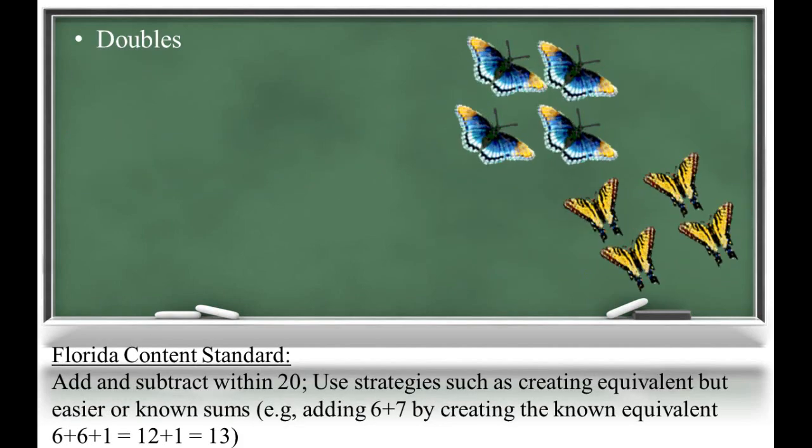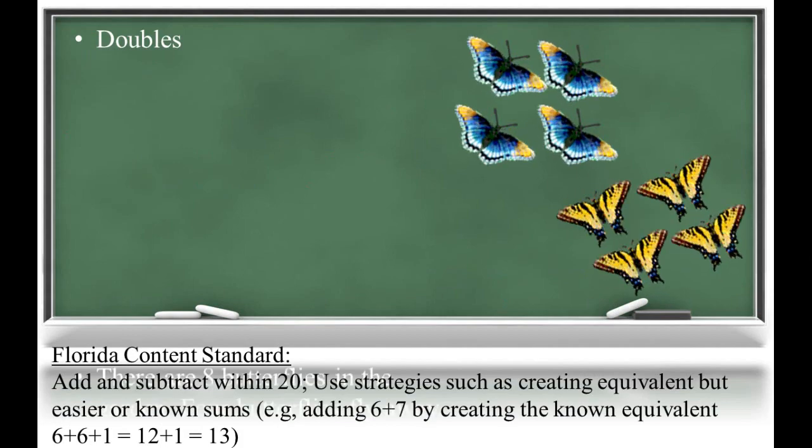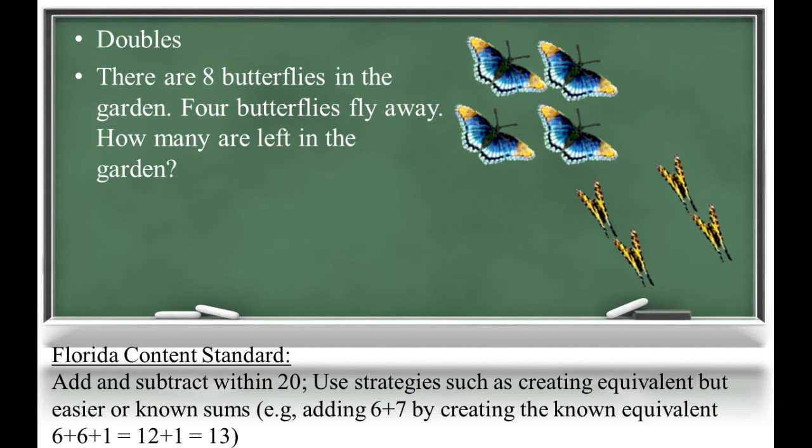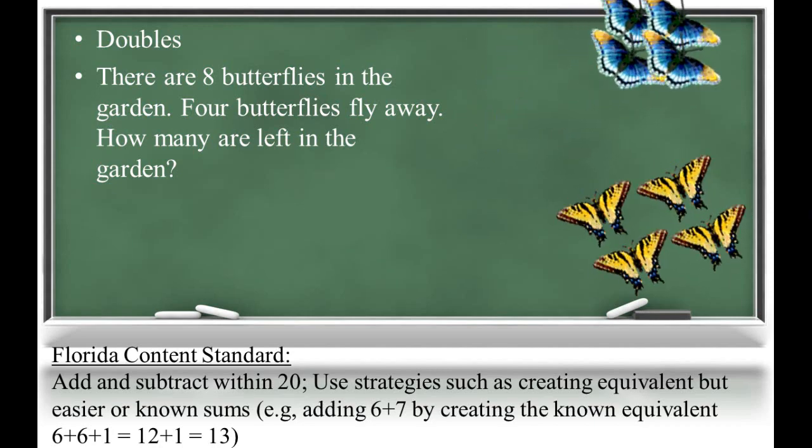We've talked a lot about addition. Now let's see how doubling can relate to subtraction. There are eight butterflies in the garden. Four butterflies fly away. How many are left in the garden?